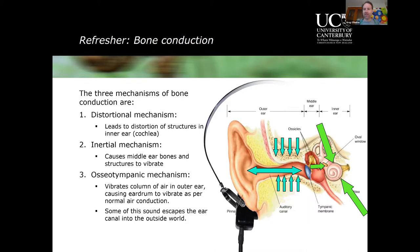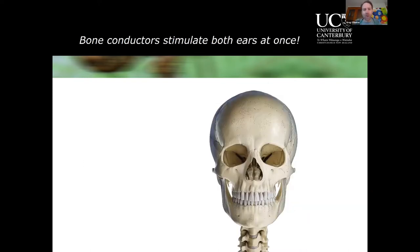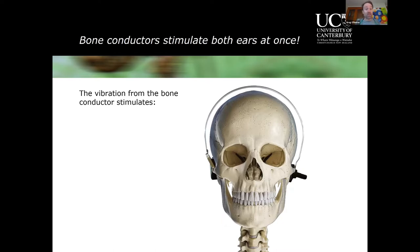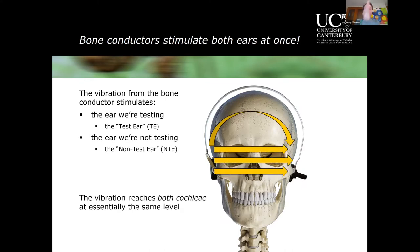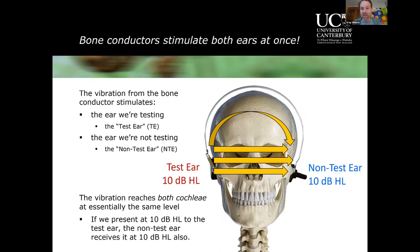When we apply a bone conductor behind the ear, we're actually stimulating both ears at once. Vibration from the bone conductor not only stimulates the test ear (TE), but the sound also crosses through the entire skull and makes its way to the contralateral ear — the non-test ear (NTE). It's a very efficient process: the sound level is essentially the same on both sides, reaching both cochleas at the same level.